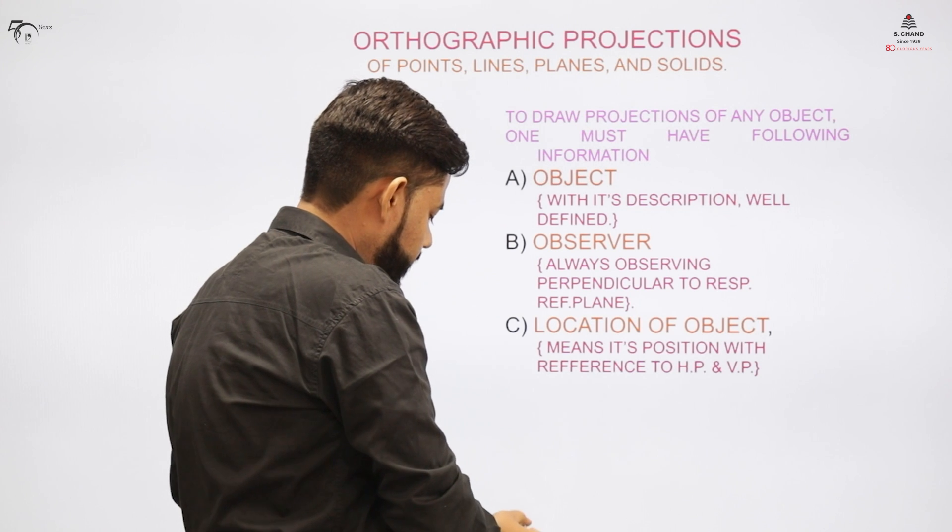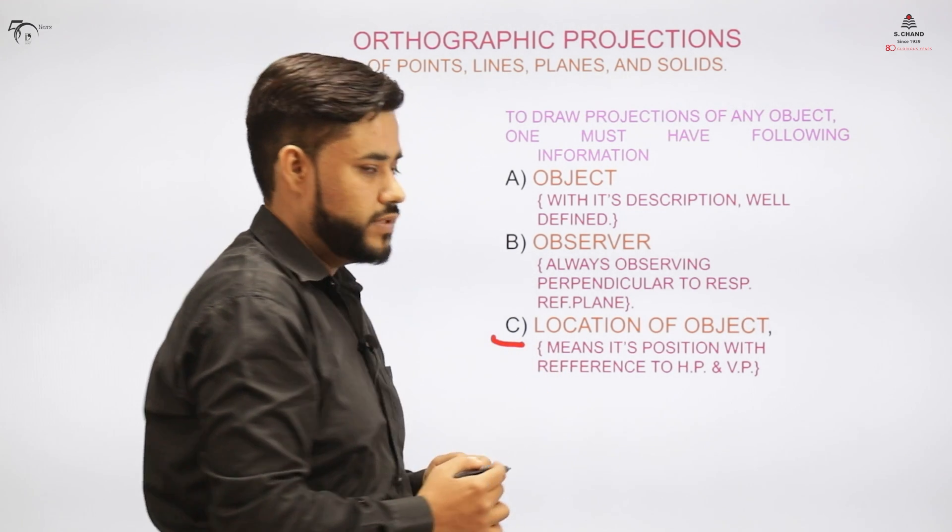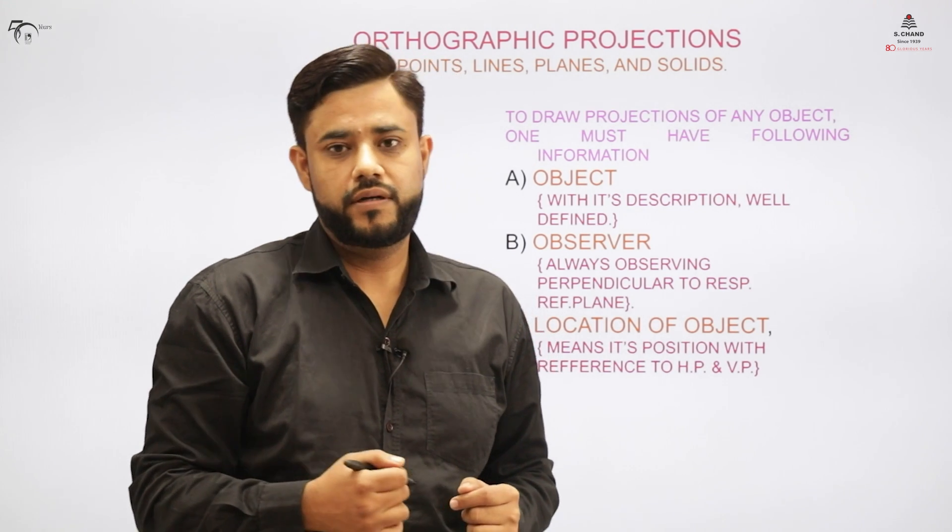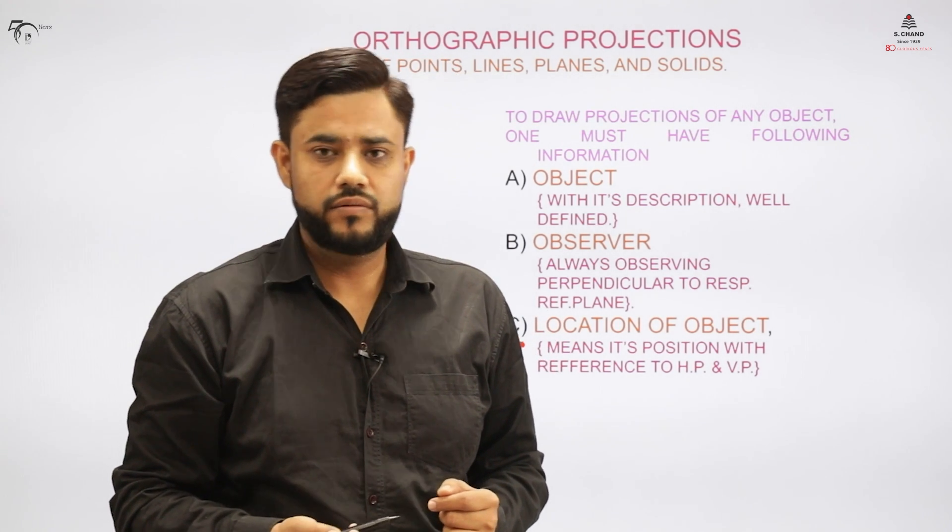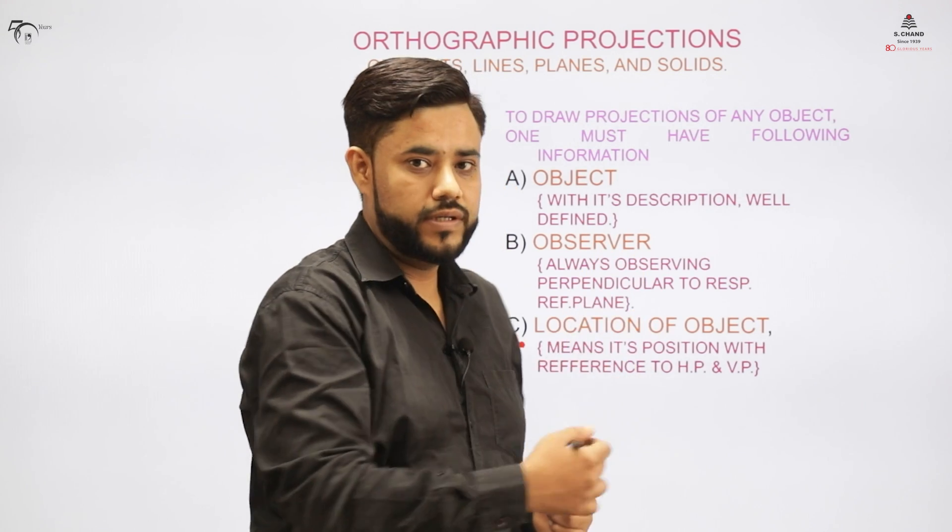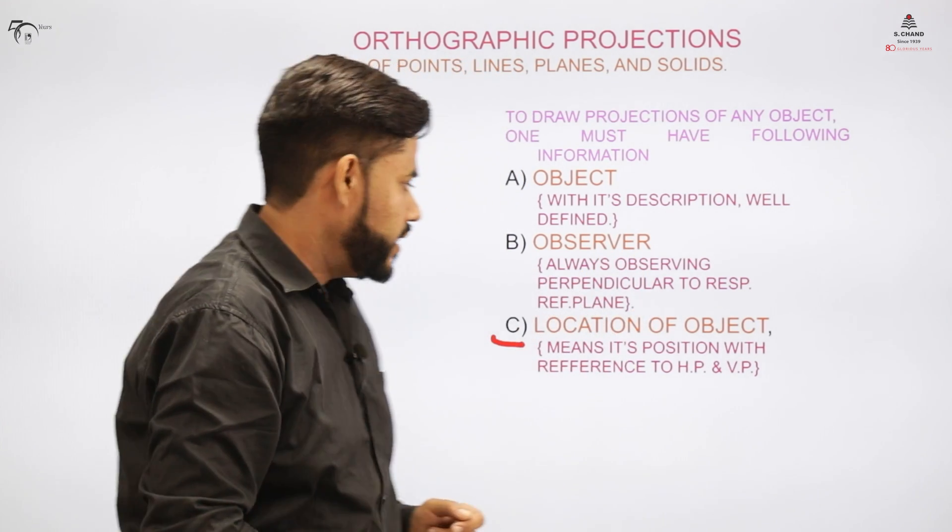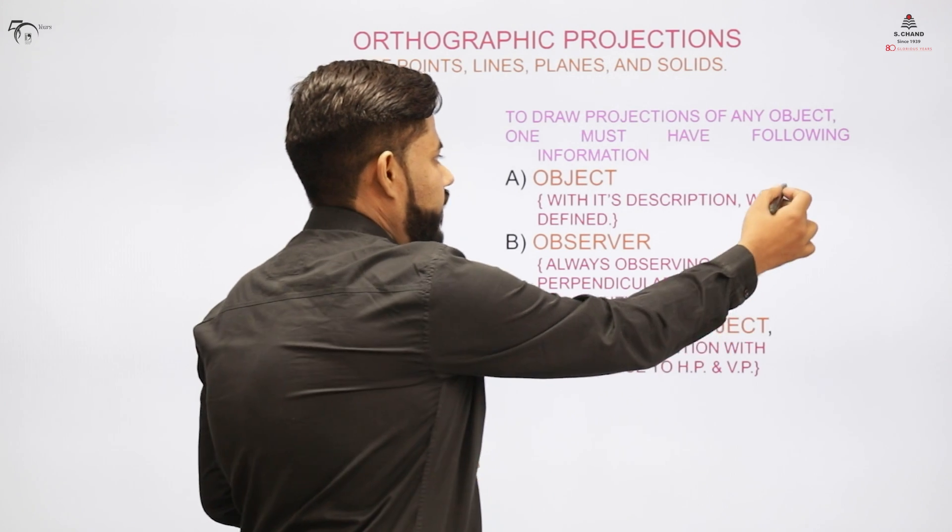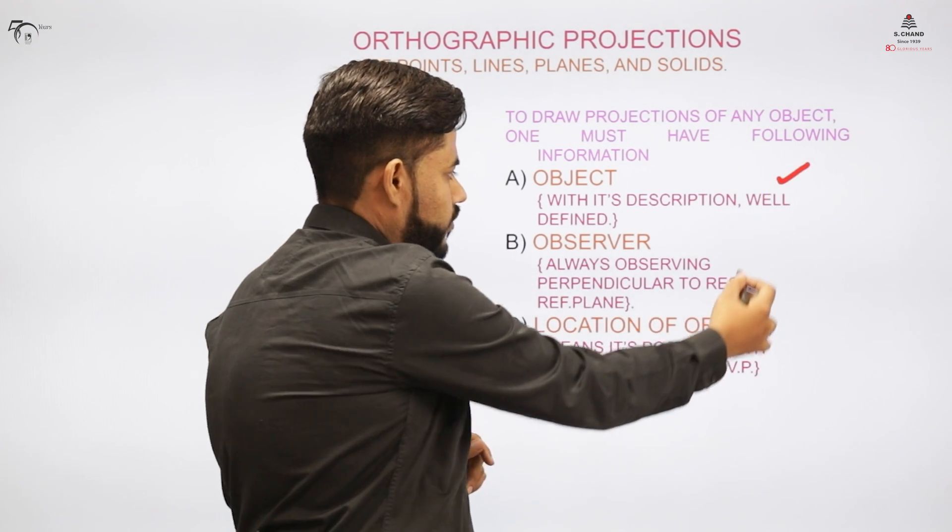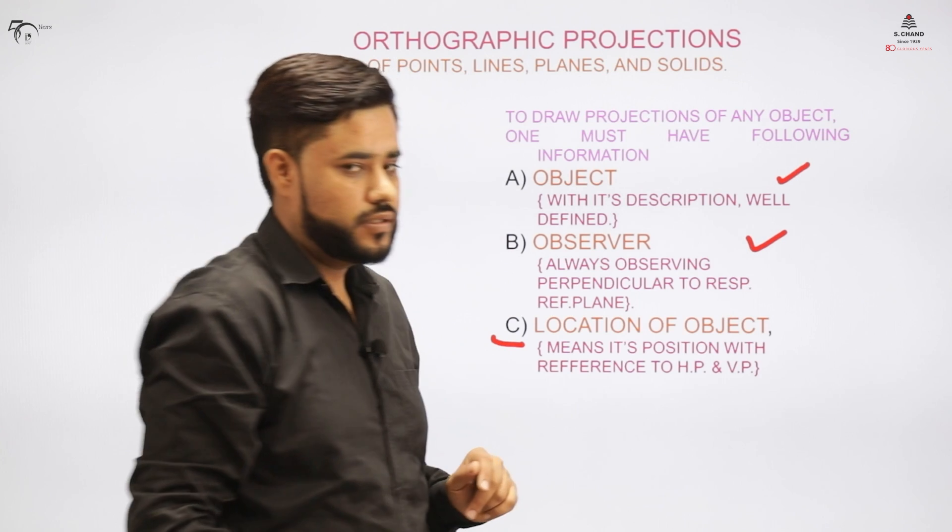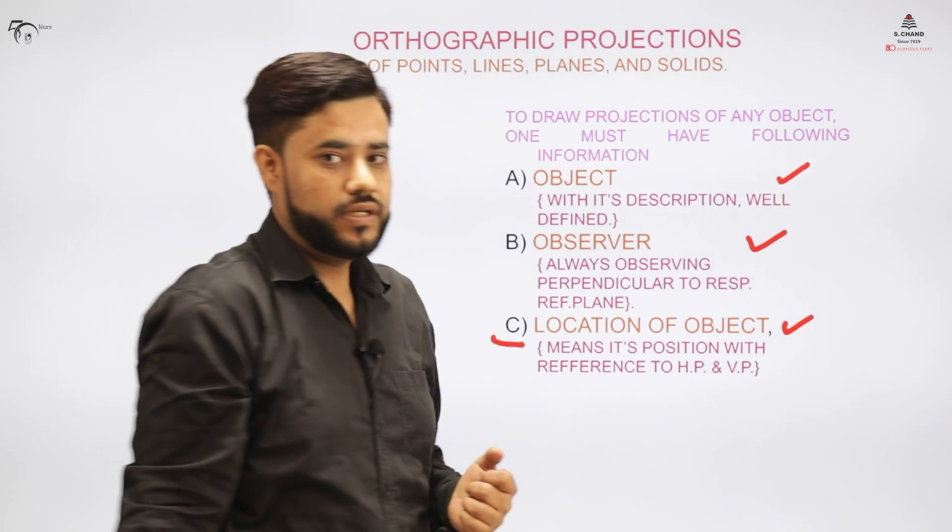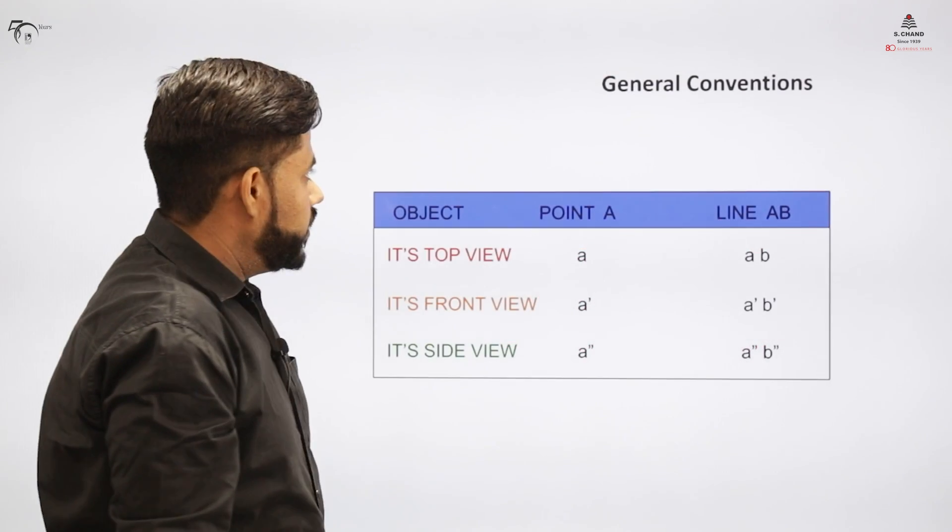The question would indicate that the object is spherical. It would also indicate the position of the observer and where is the location of the object, meaning the object would be located in which quadrant, first quadrant or second quadrant. I will come to this quadrant situation in my coming slides. So you have an object well defined, the observer who is watching that object, and the location of the object clearly defined. Now the general conventions we'll be following for the drawings.